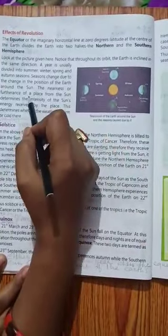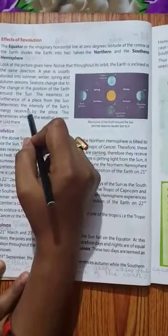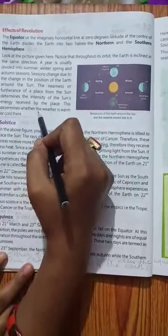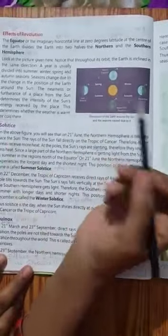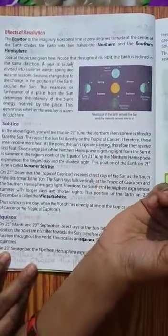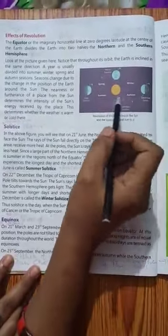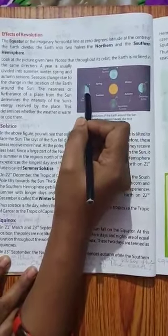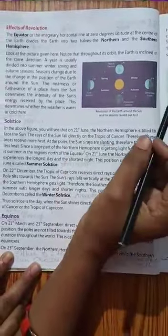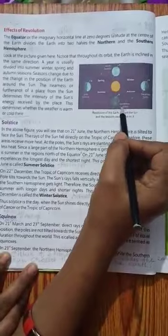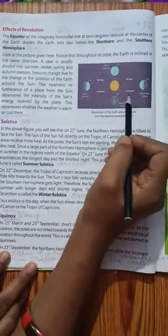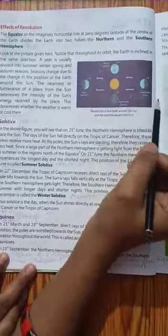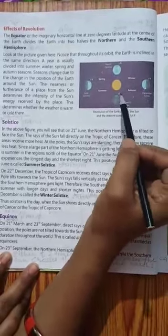The nearness or furtherness of a place from the sun determines the intensity of the sun's energy received by the place. This determines whether the weather is warm or cold. Isse hume pata chalta hai ki kab garam hai, kab cold hai. Dekhiye summer season yaha par June mein. Yaha par dekhiye, prithvi par sidhi kirnye padti hai sun ki. September ki time pe. Next yahan December. And here March. This is the diagram of revolution of the earth around the sun and the seasons caused due to it.